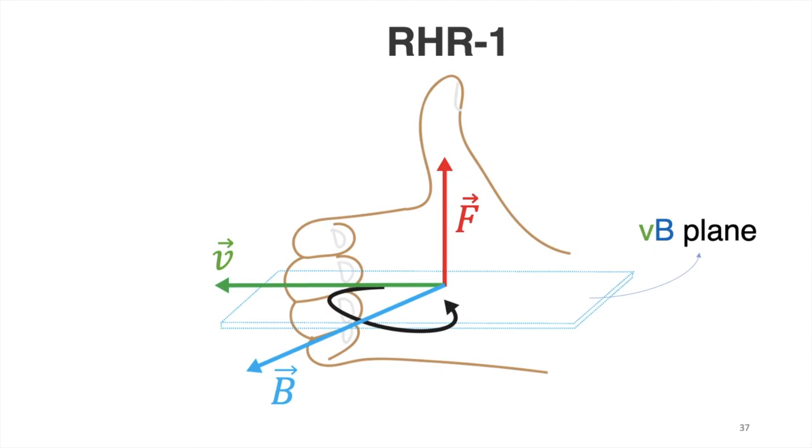If the problem gives us the direction of magnetic force instead, then you just have to use right-hand rule to determine the direction of the velocity vector of the charge or the direction of the magnetic field.